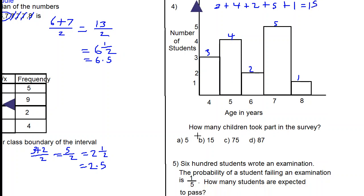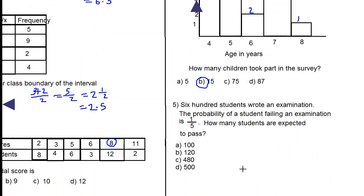So 15 students took part. The answer is B. Let's move on to number 5. Six hundred students wrote an examination. The probability of a student failing an examination is 1 out of 5. How many students are expected to pass?